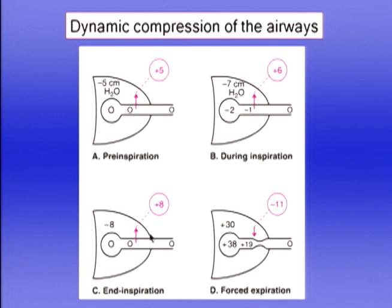At the end of inspiration, with no flow, all airway pressures are zero, but intrapleural pressure is more negative because the lung is at a higher volume and has more elastic recoil. The pressure difference across the airway — holding it open — is 5 cmH₂O at one point, 6 at another, and 8 at yet another. We're assuming pressure around the airways equals intrapleural pressure, a simplification that is justified in this context.